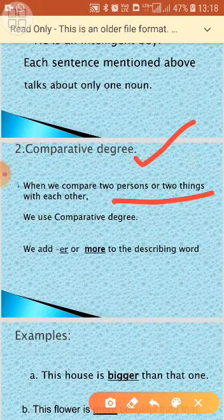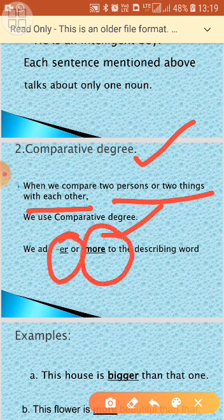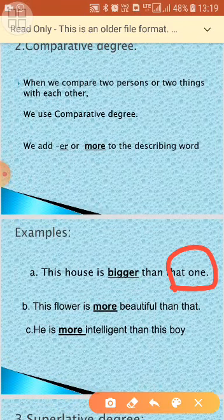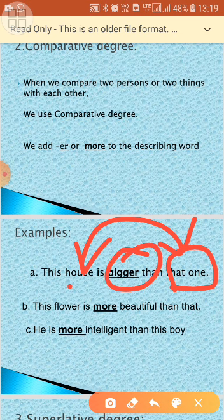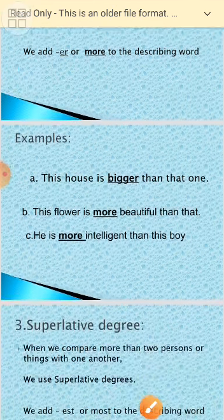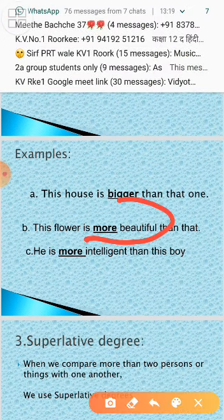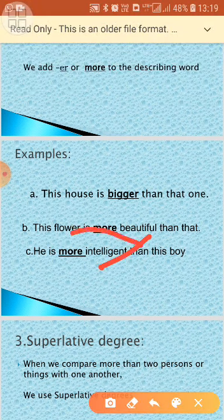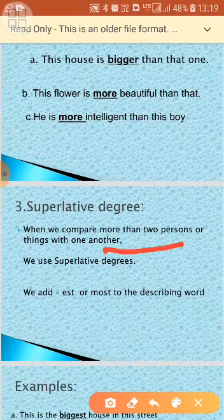Next comes Comparative degree. When we compare two persons or two things, we use this degree. We mostly add 'er' or the word 'more.' For example: 'The house is bigger than that one,' 'The flower is more beautiful than that,' and 'He is more intelligent.' When the word is longer, like 'intelligent' or 'beautiful,' we use 'more' instead of 'er.'